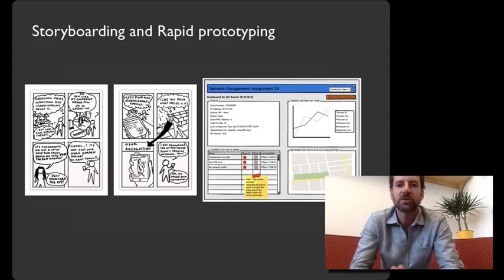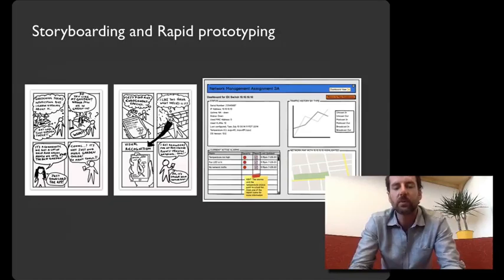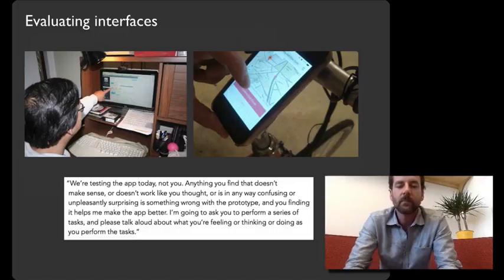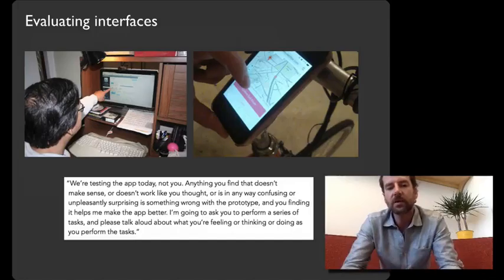You learned how to take what you saw out in the real world and convert those into storyboards and make rapid prototypes. This is a powerful part of the designer's tool belt because you're able to quickly make new designs and bring new things into the world. These prototypes are both powerful instantiations of your ideas and also really important anchors for conversations with other stakeholders in a design project. You also learned lots of ways to evaluate interfaces both formatively, really early on, and then summatively at the end of the project.